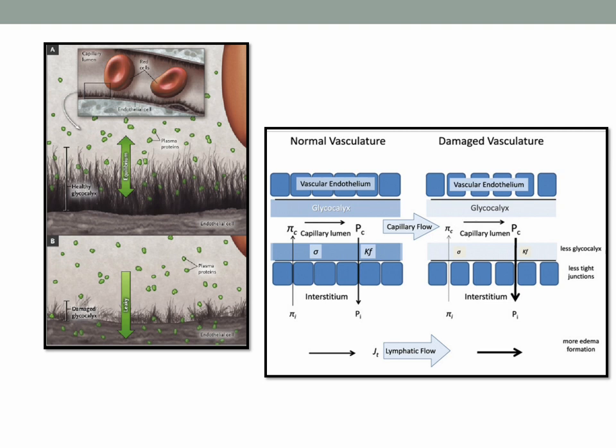In this section, there is a magnified portion of the capillary, and we want to project here the role of a healthy glycocalyx. Glycocalyx is a hairy lining of the endothelial layer of the capillary, and it is very important to maintain oncotic pressure by binding plasma proteins.